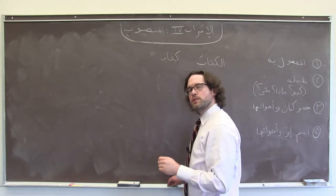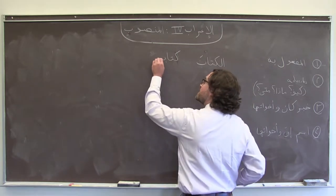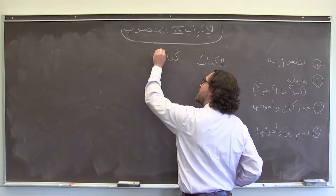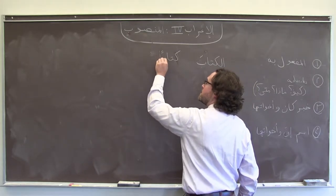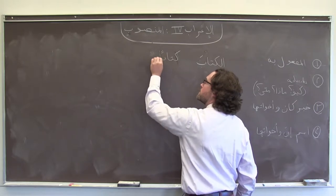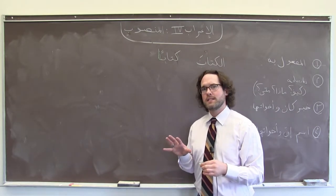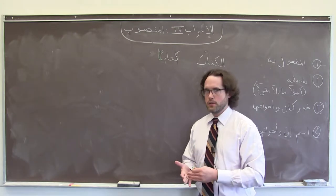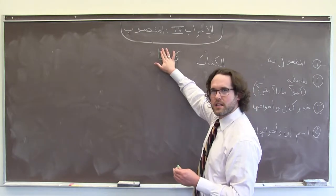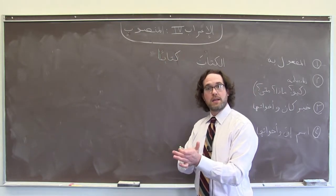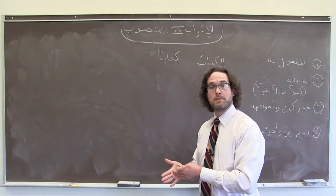There's actually a wrinkle that distinguishes منصوب from the other case endings. When we see it at the end of a singular noun, it also gets an أَلِف at the end. So it would not just be كتاباً with a فتحتان like this — we would add an أَلِف as well. This means that even in a non-vocalized text, reading a book or newspaper article, we will often see the أَلِف even if we don't see the تنوين, because orthographically that is the rule — the أَلِف needs to be included.